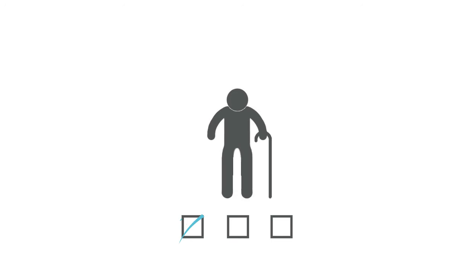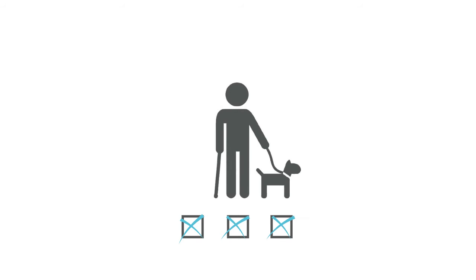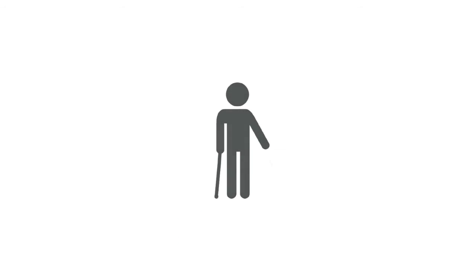If you were the wrong age, or lived in the wrong postcode, or had the wrong disability, you wouldn't be able to access the services you needed. The result? People often missed out or had to wait years for even basic life stuff, like getting help with showering.